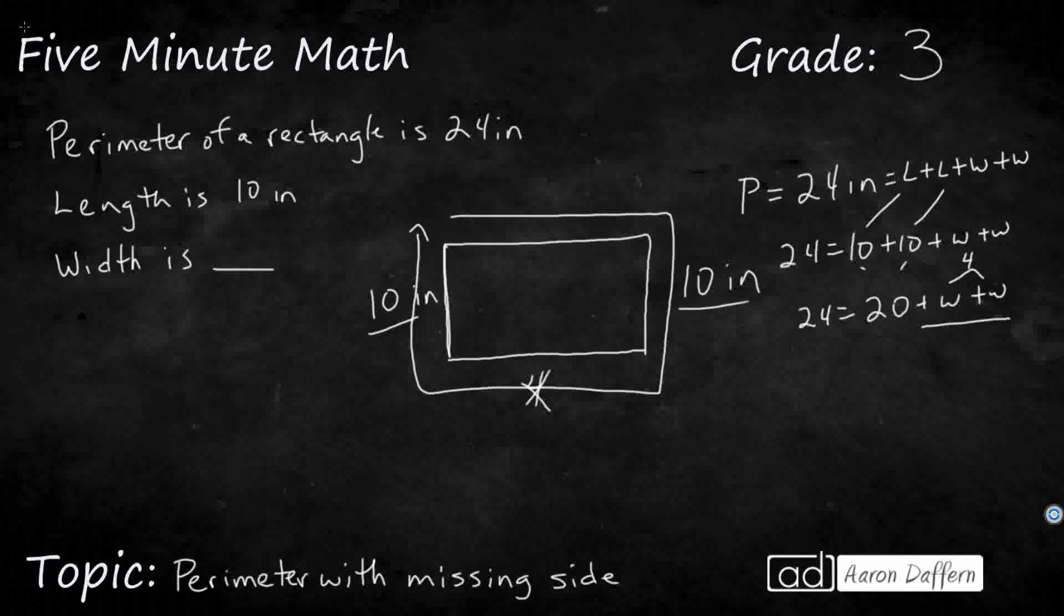So, how could I cut that 4 in half? What if I made that 2? So 24 equals, let's see, my length is 10 plus 10. And if I said plus 2, plus 2, well, that makes 20, that makes 4. 20 plus 4 does make 24.